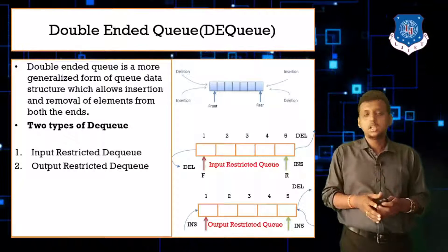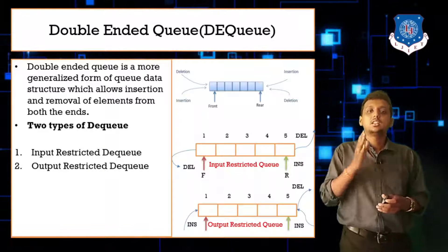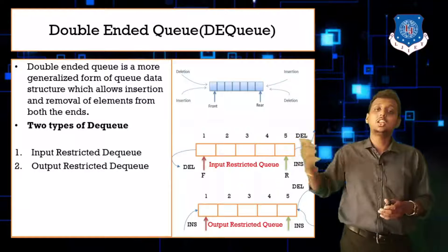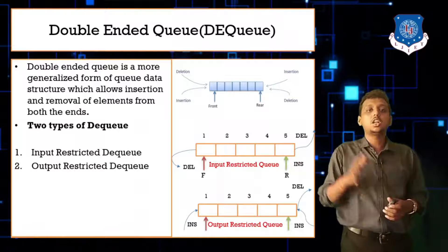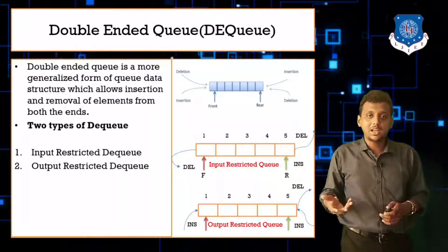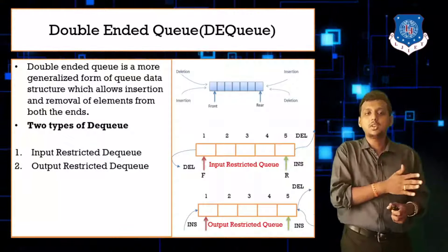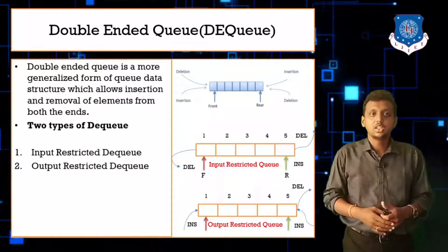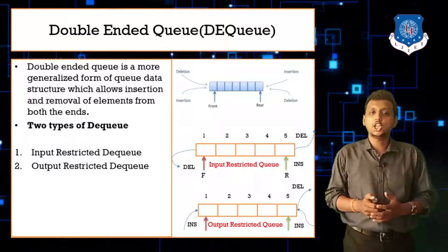In input restricted DEQ, at one end you cannot insert data elements, but on the other end you can do both insertion and deletion. In output restricted DEQ, you cannot delete values at one end but you can do insertion and deletion at one end and insertion at the other end.